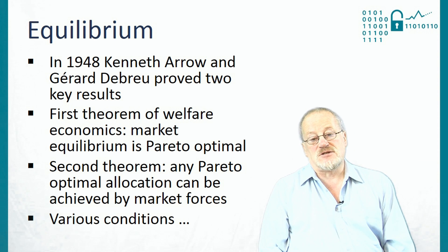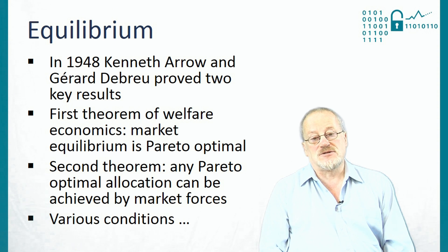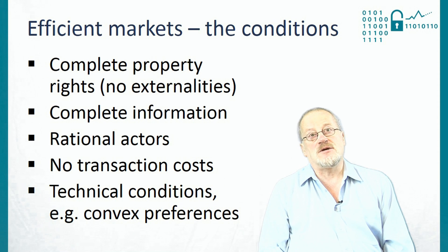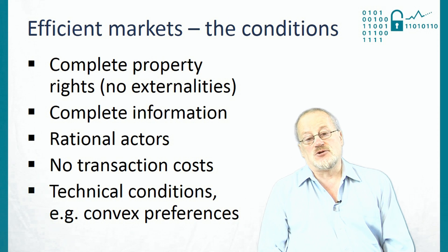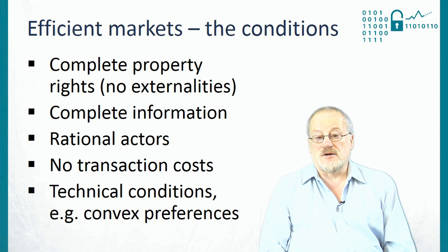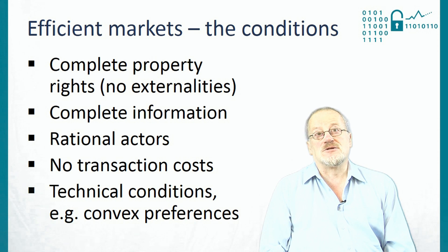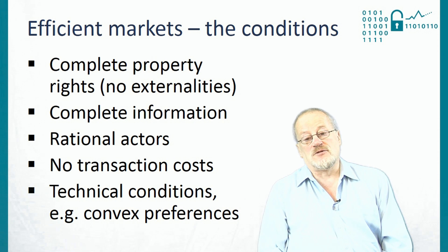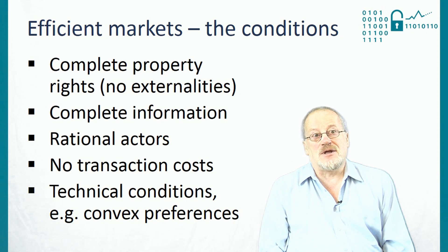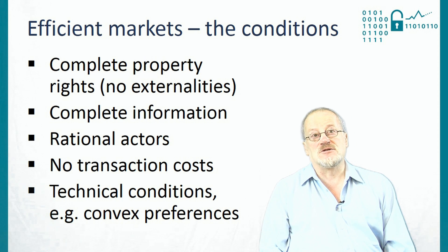The interesting thing is that Arrow and Debreu proved a number of conditions which have to hold for markets to be efficient. These include: first, that there should be complete property rights — in other words, no externalities. Second, that there should be complete information, so that everybody in the market knows as much as everybody else. Third, that actors should be rational — not moved by emotion, but cold-bloodedly pursuing their own best interests. Fourth, that there should be no transaction costs, meaning buying and selling shouldn't impose any costs of themselves. And then there are some technical conditions, such as convex preferences, which we're not going to worry about.